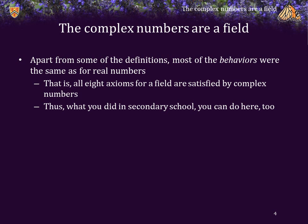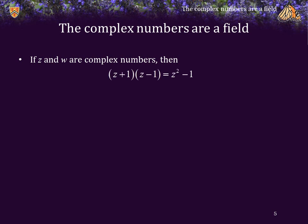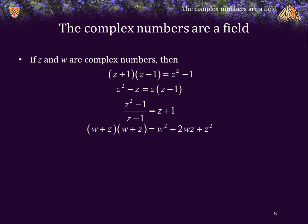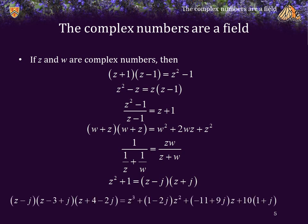Thus, everything you did in secondary school for real numbers, real polynomials, etc., are things you can do here. For example, if z and w are complex numbers, then z plus 1 times z minus 1 is z squared minus 1. z squared minus z — we can factor out a z to get the expression on the right-hand side. We can also divide the numerator by z minus 1, which leaves z plus 1. w plus z times w plus z is w squared plus 2wz plus z squared. I can simplify the expression on the left to equal the expression on the right. Also, z squared plus 1 can now be factored as z minus j times z plus j. You could expand out the left-hand side to see that it does actually equal the cubic polynomial on the right-hand side.